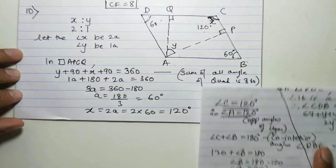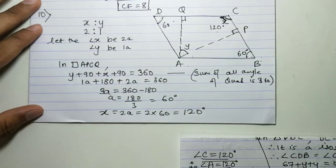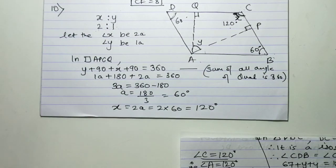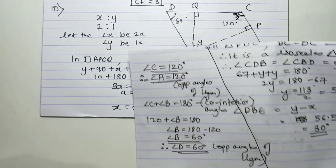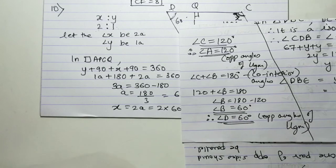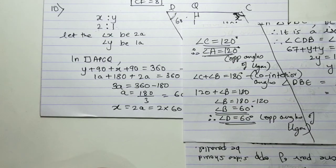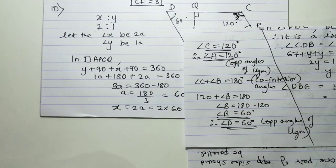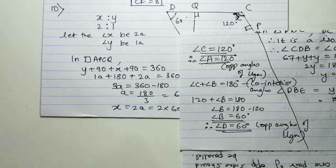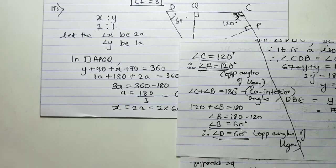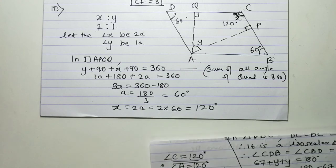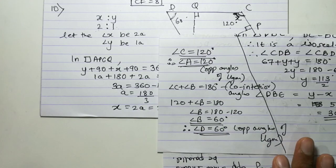First copy this part of the question. We found x, and then by using co-interior angles found all other angles. We have completed the second exercise. Pause the video and copy it. Thank you.